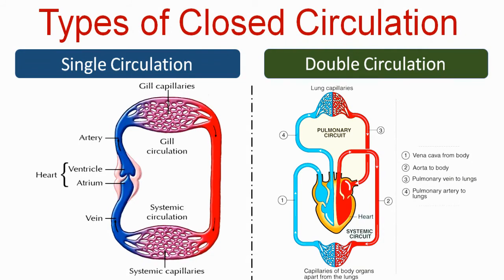In double circulation, blood flows through the heart twice during one cycle.